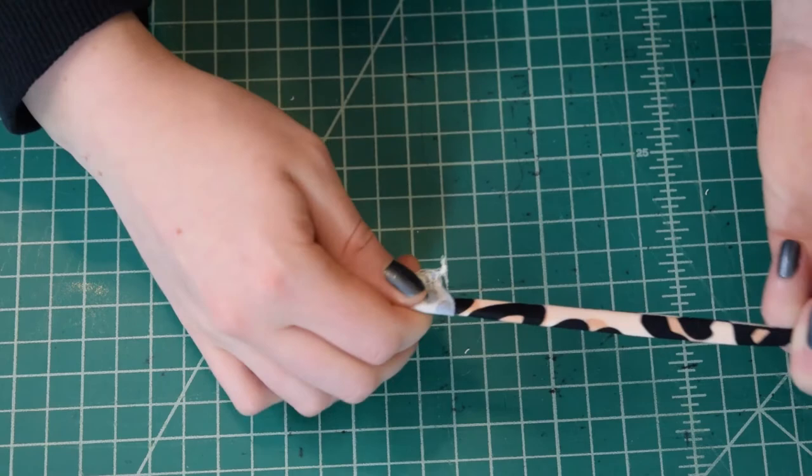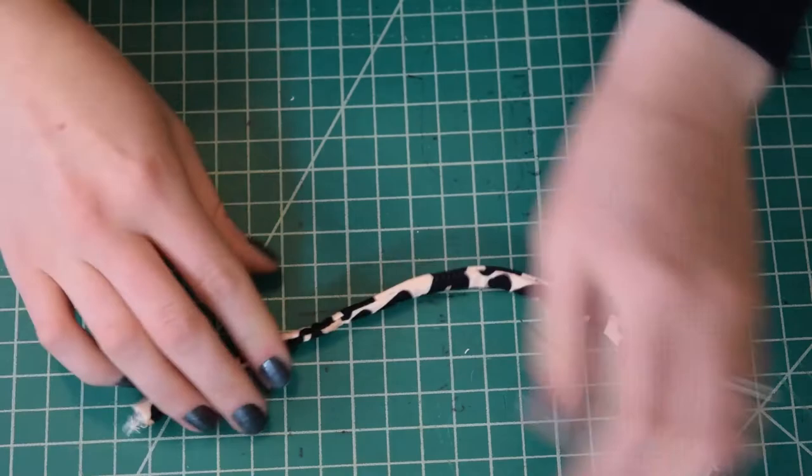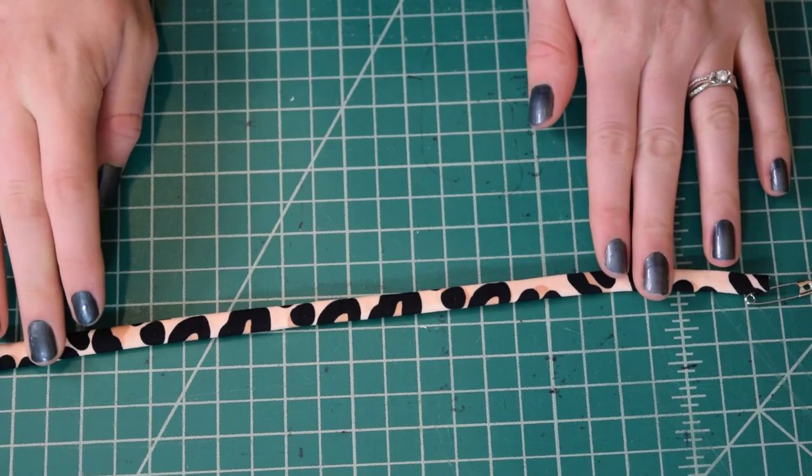So there we go. It's as simple as that. Like I said, this will work for any type of fabric tube that you want to turn right sides out as long as it is wide enough that your safety pin can fit through. So I hope that you have found this helpful and I will see you in the next one.